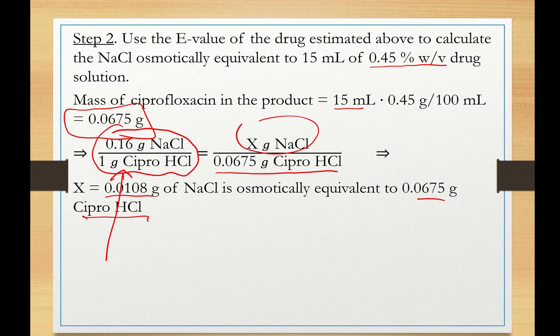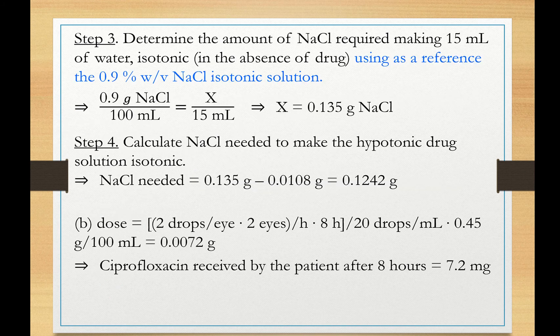This illustrates why the E-value is a very important ratio — not just a value. You use it to construct the equation and determine the amount of sodium chloride colligatively or osmotically equivalent to the amount of drug in solution. Step 3 is to determine the amount of sodium chloride needed to make 15 mL of water in the absence of drug isotonic, using 0.9% w/v sodium chloride as the isotonic reference: 0.9 grams per 100 mL gives us the amount needed for 15 mL.